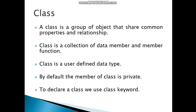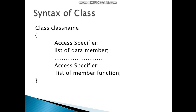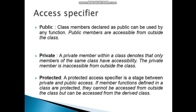Now, I am talking about class. Class is a group of objects that share common properties and relationships. Class is a collection of data members and member functions. Class is a user-defined data type. By default, the members of a class are private. To declare a class, you use the class keyword. The syntax is: write the class keyword and class name, followed by access specifier, list of data members, access specifier, list of member functions. We have three access specifiers: public, private, and protected. We will cover these in the next video as this video would become too lengthy.